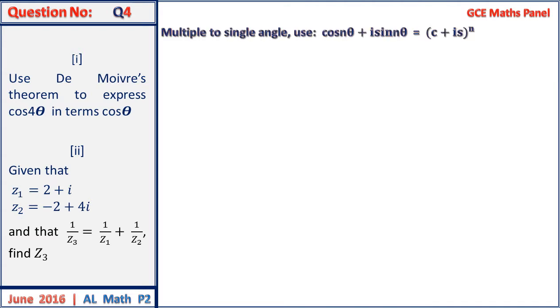This question requires us to represent multiple angles in terms of single angle. So we are going to use De Moivre's theorem: cos nθ plus i sin nθ equals (cos θ plus i sin θ) all to the power n. We expand the right hand side, we compare the real and imaginary parts and obtain the identity.